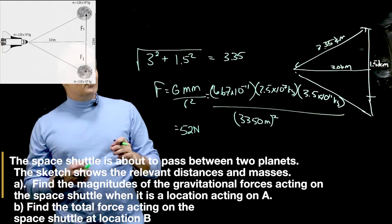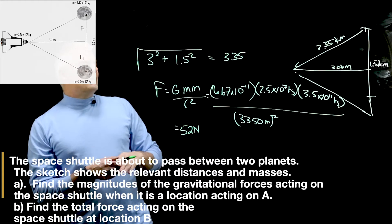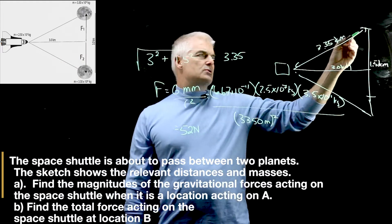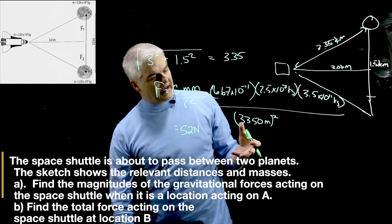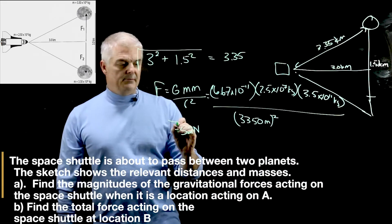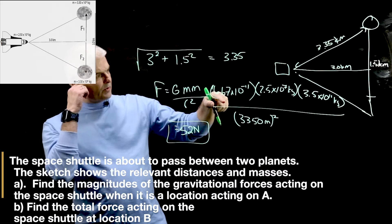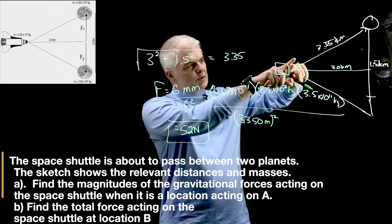That's the force being acted on the space shuttle by one of the planets. If you wanted to find the total force, you would add the two together. But in this case, the way the question's written, is to solve for what's the force between here and here.